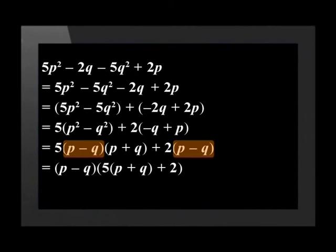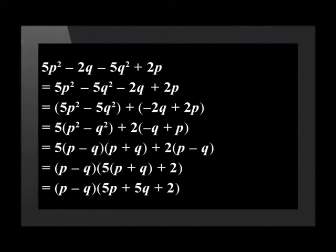We still need to multiply out the brackets within the brackets before we've finished the question. Our final answer is (p - q)(5p + 5q + 2).